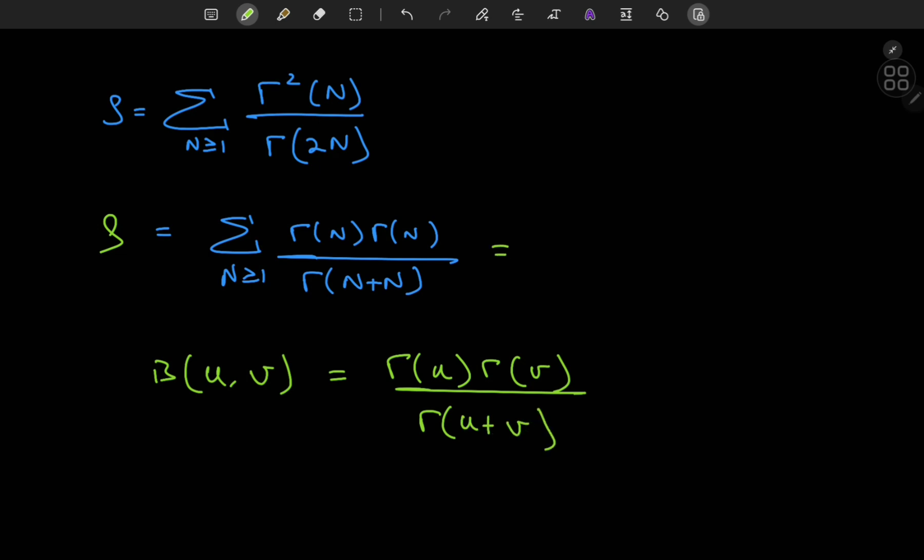So that means what you have here is a sum over the positive integers n of the beta function evaluated at n and n, as in a sum of beta functions, which is a pretty cool structure too. So it's another cool way of looking at the same sum.